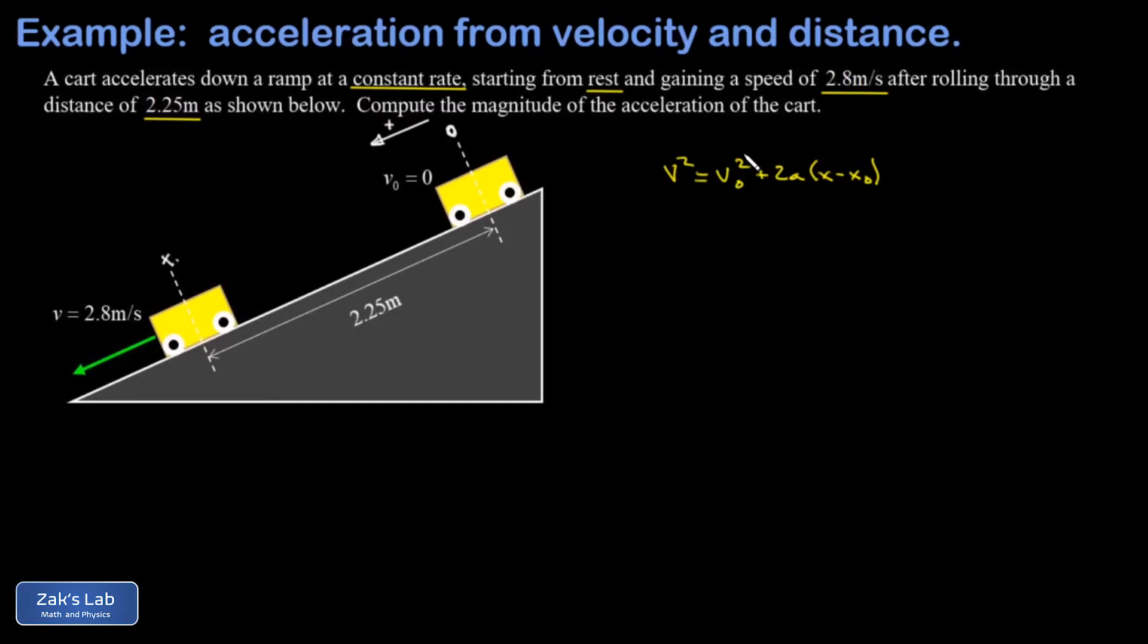The initial speed was zero and that term is gone. I know the final speed is 2.8 meters per second, so on the left-hand side I have 2.8 squared. The acceleration is the unknown that we're looking for. The final x position is 2.25 meters and the initial x position is zero.